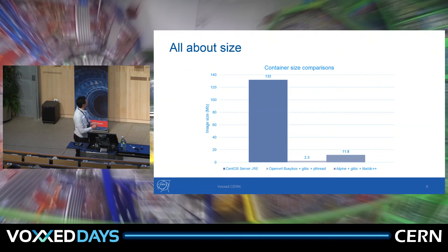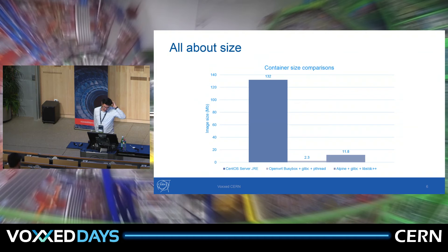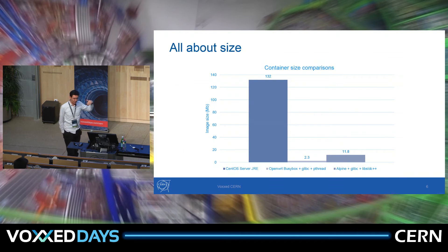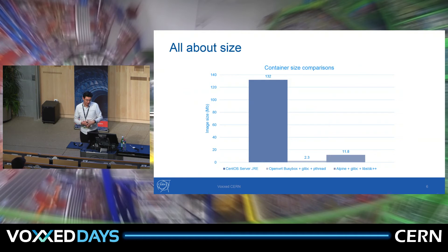When we talk about size, these are your typical container size comparisons. Of course it's much smaller — I don't have a Java runtime in there, so I've already saved 80 megabytes. On one hand you have the typical CentOS 7 shipping with a server Java runtime. On the other hand, a very light option at 2.3 megabytes using BusyBox OpenWrt — a very lightweight Linux distribution for routers, small boxes, and embedded systems. Unfortunately, OpenWrt doesn't really have a packaging repository or packaging system, so it's very light.